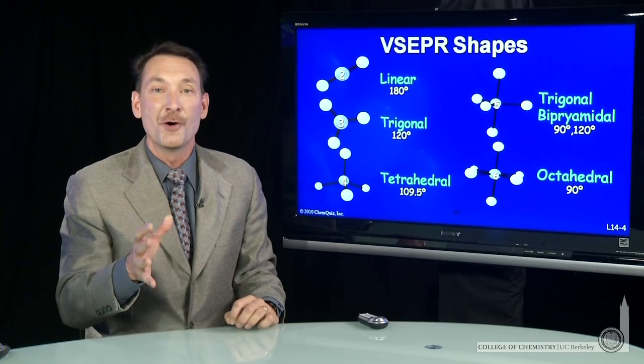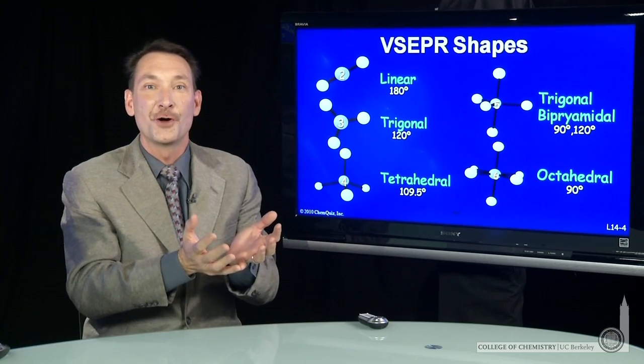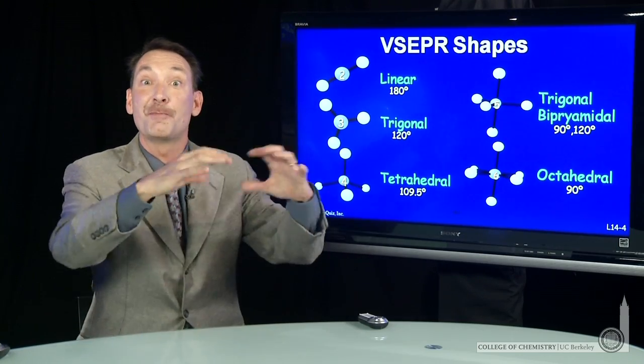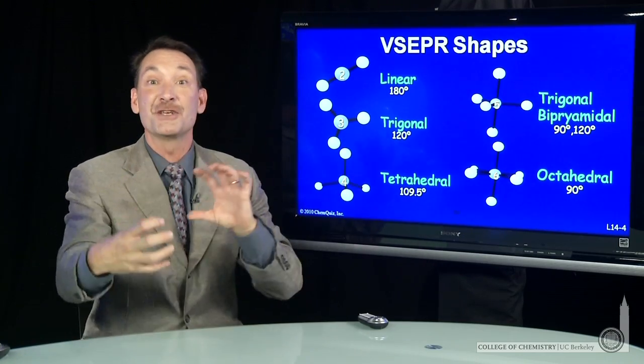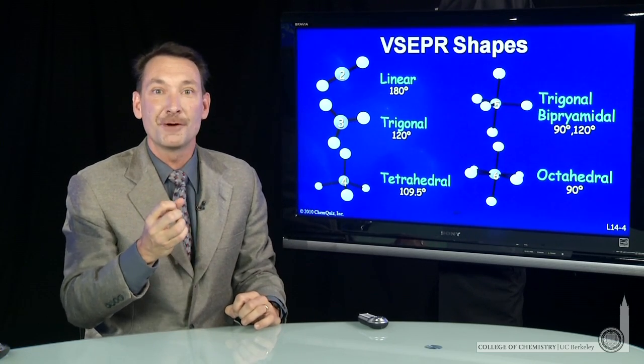Molecular shape and geometry is motivated by trying to keep everything apart in space. So if you have lone pairs or if you have a bonded atom, you'd like to arrange them as far apart as possible. It's called valence shell electron pair repulsion.